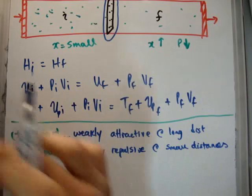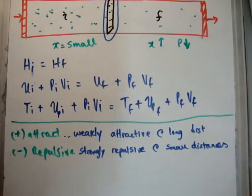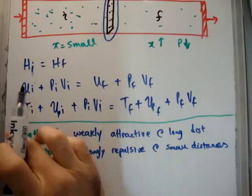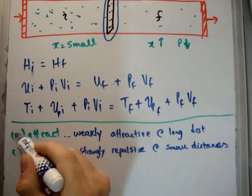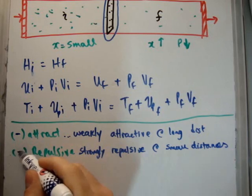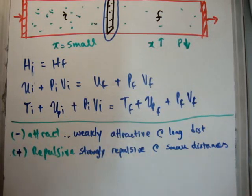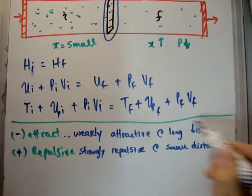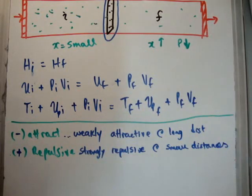So usually the potential energy term dominates. And this is the attractive. So usually the potential energy term is negative. So what I'm going to do is, when it's attracting, we want to give it a negative sign. And when it's repulsive, I'm going to give it a positive sign. Usually the potential energy is attractive because usually we're talking about long distance forces. And as we bring the molecules closer and closer together, it becomes repulsive and it changes sign.